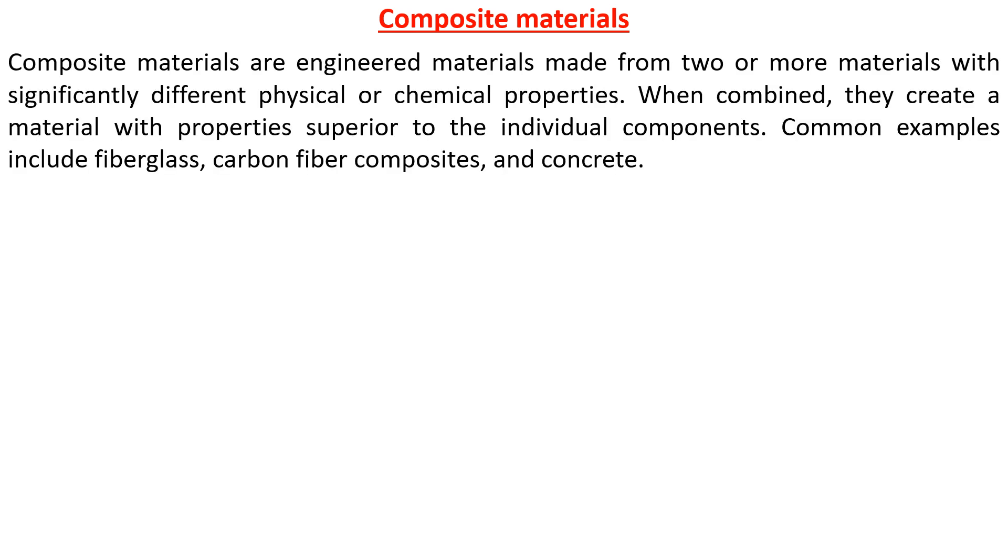Composite materials are engineered materials made from two or more materials with significantly different physical or chemical properties. When combined together, they create a material with properties superior to the individual components. Common examples are fiberglass, carbon fiber composite and concrete.